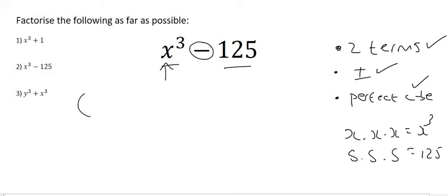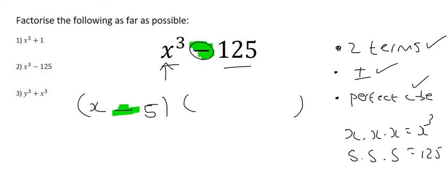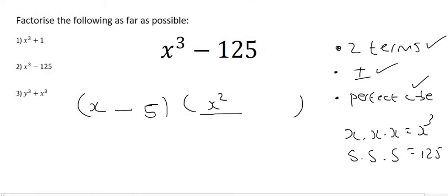So what we do is we open up our two brackets. The perfect cube of x³, or the cube of x³ goes here. The cube of 125 goes here. Those two signs will have to be the same. This will be x squared, because x and x squared gives us x to the power of 3. We then flip this sign over,